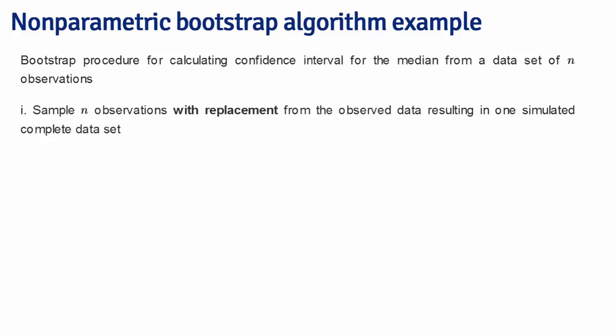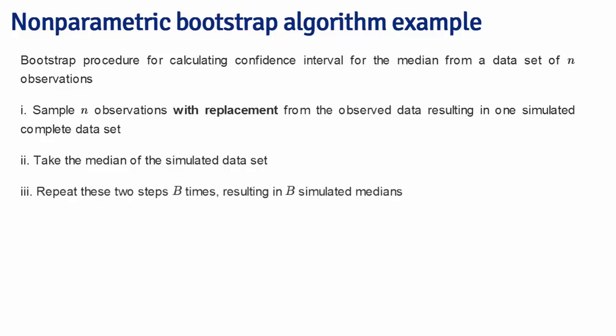When you get a resampled data set, in our example, we're going to take the median, or if you're using a different statistic, you'll simply take that statistic of the simulated data set. Then you're going to repeat this step over and over. I say B times here, where B is the number of Bootstrap resamples.